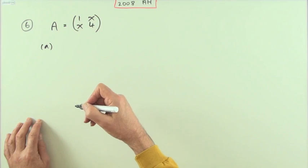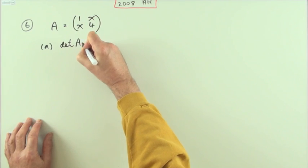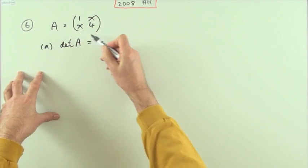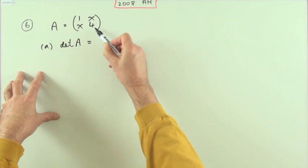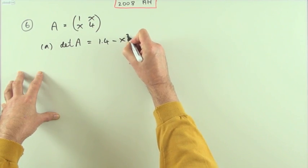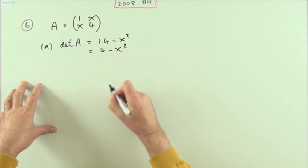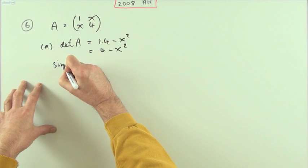It won't have an inverse if its determinant is zero, so work out its determinant. What is the determinant of A? Well, the simple pattern for a two by two matrix is main diagonal product minus other diagonal product. It'll be one times four minus x squared, that is four minus x squared.